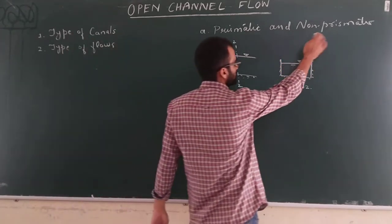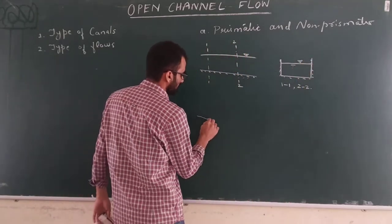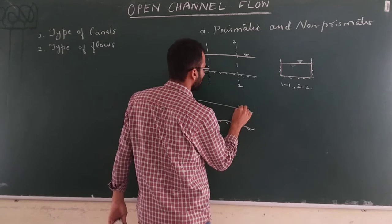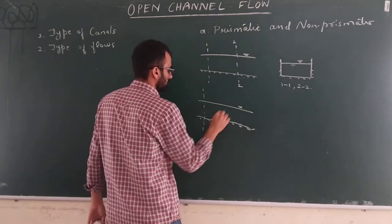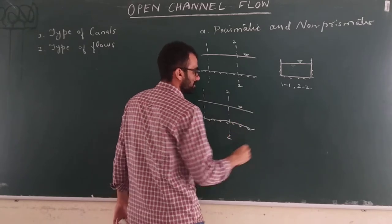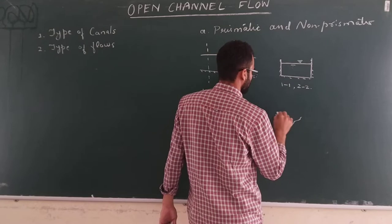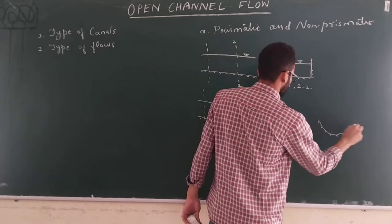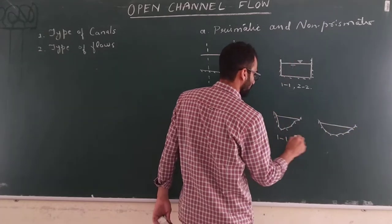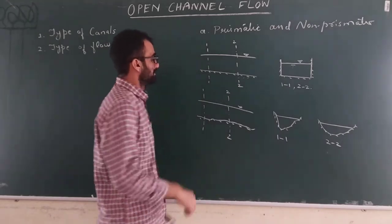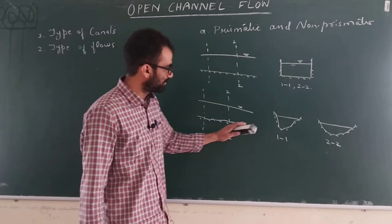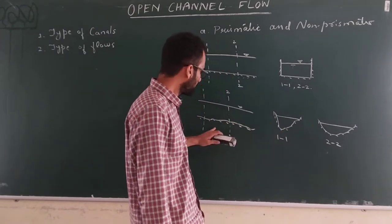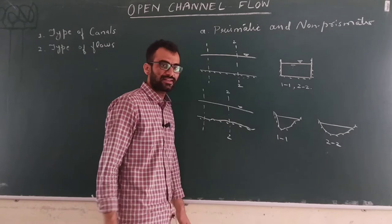Natural channels will be considered as non-prismatic. Why? Because if you consider a river, you will have some bed level and water flowing in it. If you take cross sections at different locations of a natural river, at section 1-1 you have one cross section and at section 2-2 you have a different type of cross section. In a natural channel, the cross sectional geometry does not remain constant along space — it changes with space. These types of canals are called non-prismatic canals.